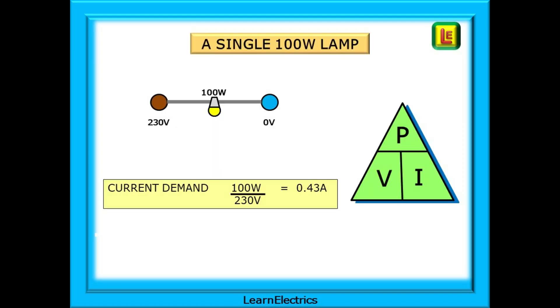A single 100 watt lamp is connected across the 230 volt supply and we are getting 100 watts of lighting from it. Power law tells us that the wattage divided by the voltage will tell us how many amps this is and our answer here is 0.43 amps.